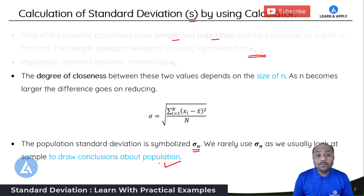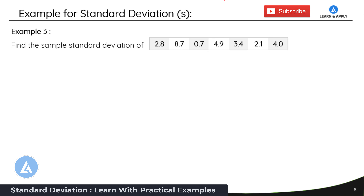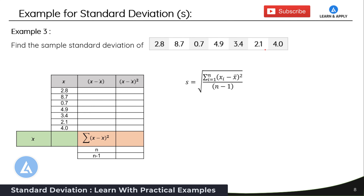Before explaining how to use Microsoft Excel and the scientific calculator, here is another example for you. Calculate the standard deviation for this sample: 2.8, 8.7, 0.7, 4.9, 3.4, 2.1, and 4. Please put your answer in the comment section. The procedure is the same — use the formula, calculate the mean, compute xi minus x-bar, square it, then divide by n minus 1. Please do that, and meanwhile let's see how to do it using Microsoft Excel.